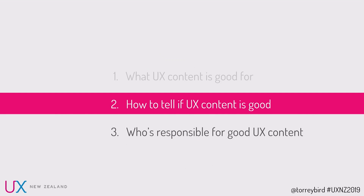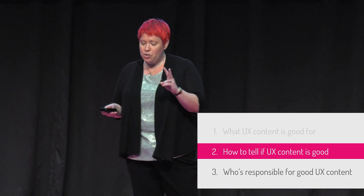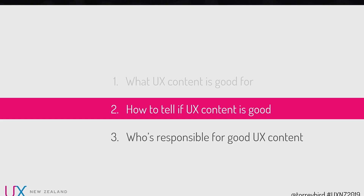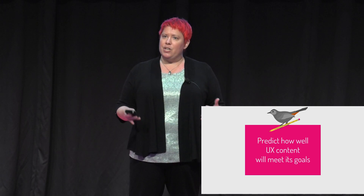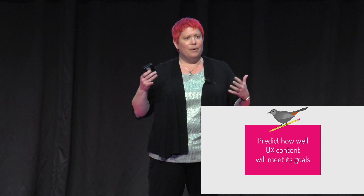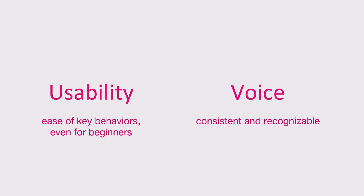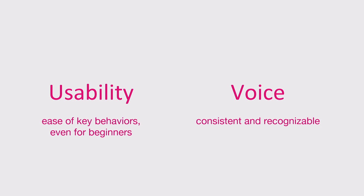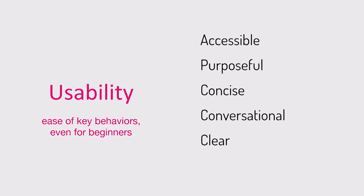How do we tell if UX content is any good? There are two main ways: we predict how well it will meet its goals, and we measure how well it meets its goals. For predicting, I'm going to talk heuristics — from Nielsen Norman Group and others — which we can apply in two big categories: usability and voice. For usability, we need it to be accessible, purposeful, concise, conversational, and clear. Super easy, but what does that mean?